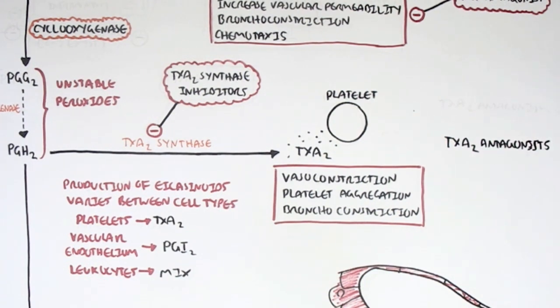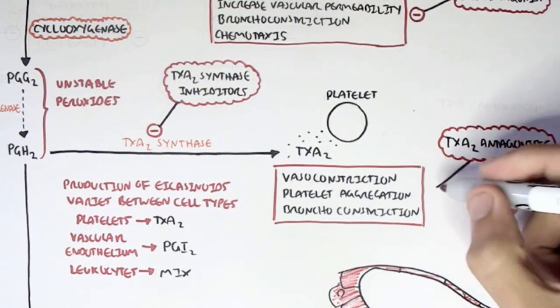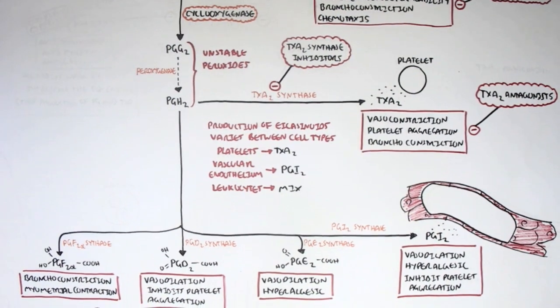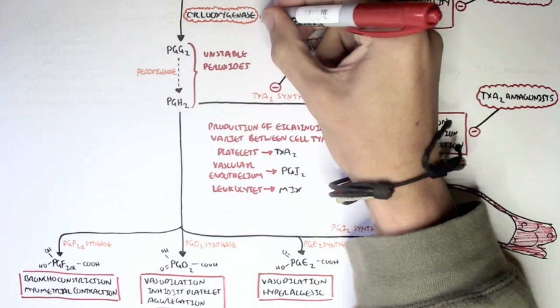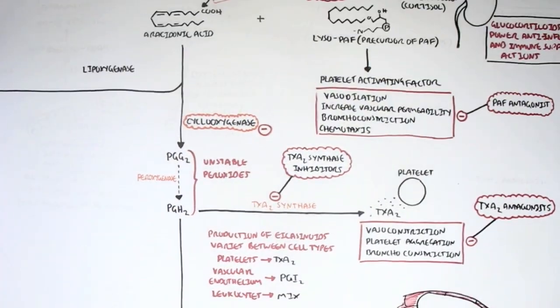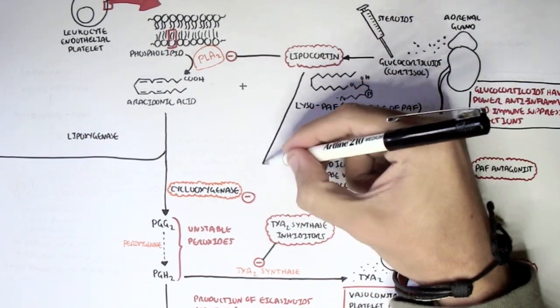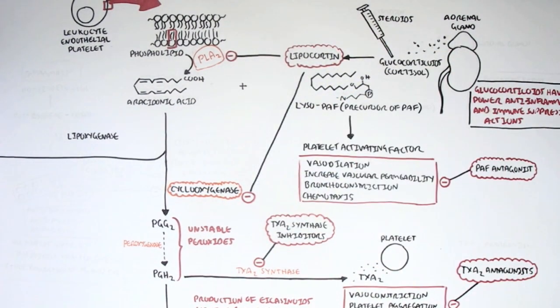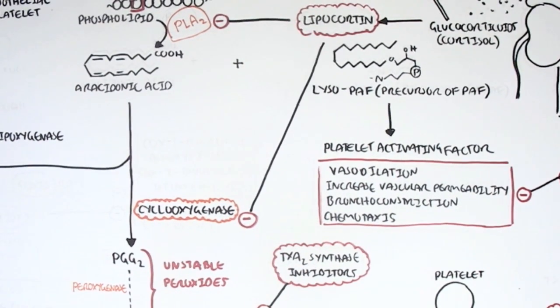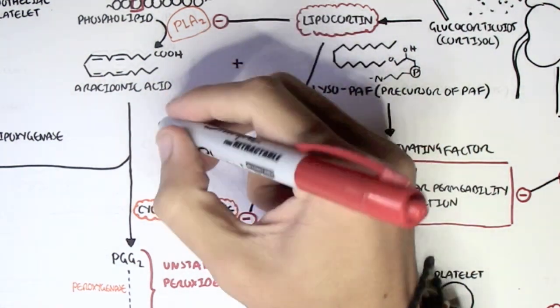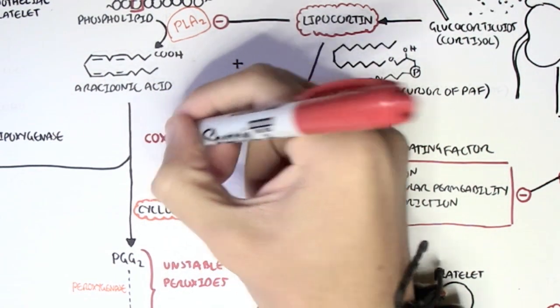But most importantly, a good way to stop promoting inflammation is by inhibiting the main enzyme involved in the production of all this, which is cyclooxygenase. So a treatment that can be used is by using glucocorticoids. Lipocortin can inhibit cyclooxygenase and therefore inhibit the production of all these inflammatory mediators.